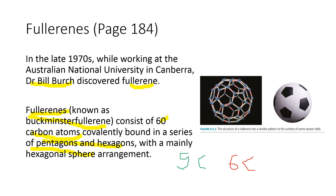Using a soccer ball as an example: the black spots represent the five-carbon pentagon, and you can count one, two, three, four, five. The white spots represent the six-carbon hexagon — one, two, three, four, five, six. That is generally how a fullerene looks like.